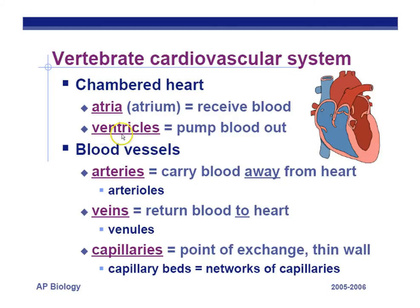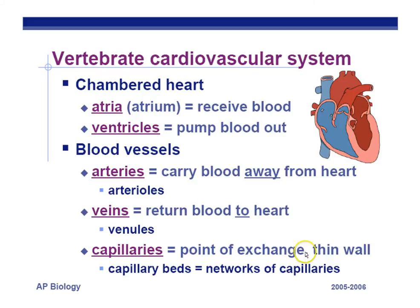A side tip for ventricles: if you ever forget that atria are on top and ventricles on the bottom, look at the heart — where do you see a V for ventricle? Even the bottom of the heart looks like a V. So remember, the bottom of the heart looks like a V for ventricles. Veins return blood to the heart, and that return is a lot slower. Capillaries are the smallest blood vessels and are the point of exchange — where fluid, amino acids, glucose, and oxygen leave the circulatory system, but red blood cells stay in. We have a closed circulatory system. Capillary beds are networks of capillaries that exchange substances.